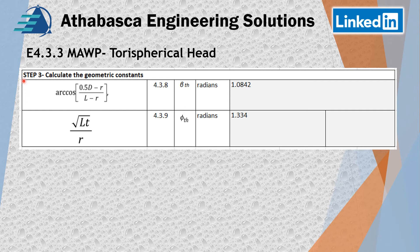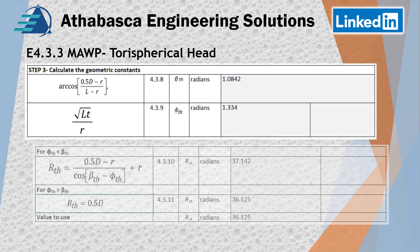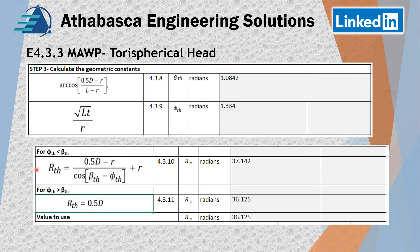Now we look at step three from Section 8 Division 2 — calculating beta in radians and theta in radians. These are straight geometry-type moves. Through step three we look at a couple of conditions: if theta is less than beta, we follow one equation; if theta is greater than beta, we follow the simpler one, which is 0.5 times D. That's all there is to it — very cookbook.